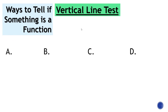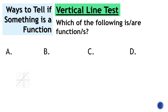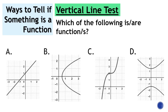Let's begin with the case where the given is a graph. We will use the vertical line test. Given four graphs, to use the vertical line test we just draw a vertical line. If the intersection of that vertical line and the graph is exactly one point, that means it's a function — like in letter A. In letter B, if you draw a vertical line and it intersects two or more points on the graph, that means it's not a function.